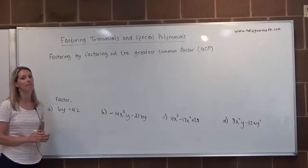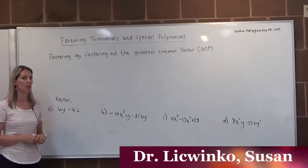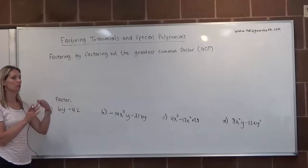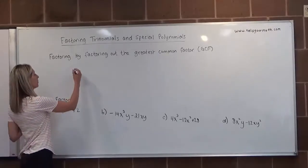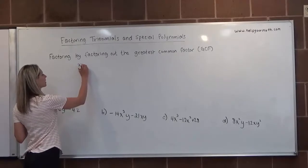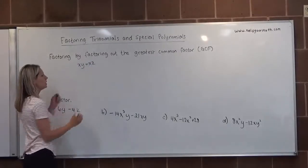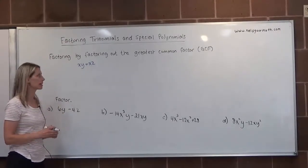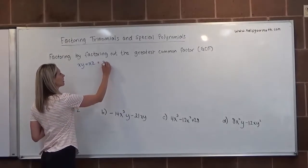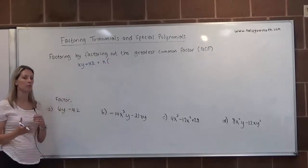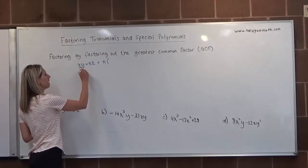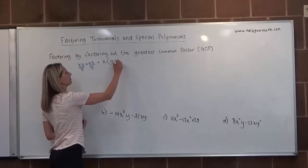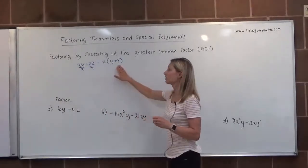In this video we're going to look at factoring by factoring out the greatest common factor. The greatest common factor is the largest number or variable that goes into all of the terms we're given. For example, if we have xy plus xz, these two terms have an x in common. We factor out the x, write it in front, then write the leftovers from each term inside parentheses. So we'd be left with y and z. That's the final factored form.